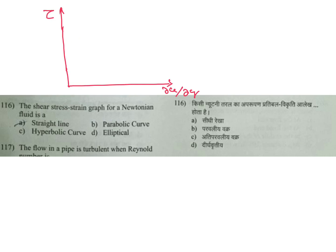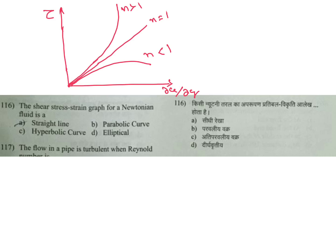The shear stress versus strain rate (du/dy) graph for a Newtonian fluid: for a Newtonian fluid, it will go like this — N equal to 1, so it is a straight line. For dilatant, N is greater than 1, and for pseudoplastic, N is less than 1. Answer is A.